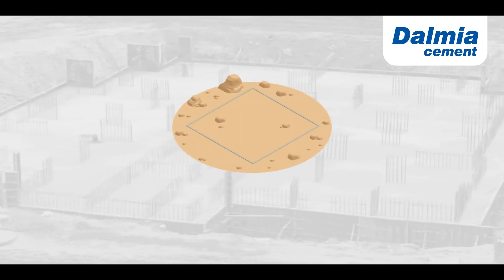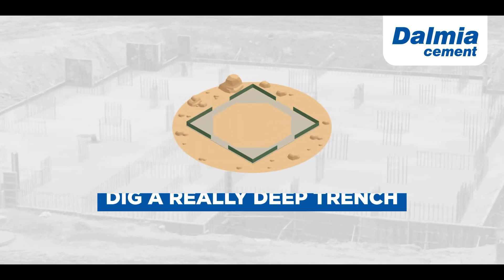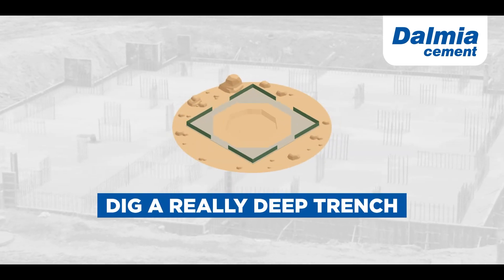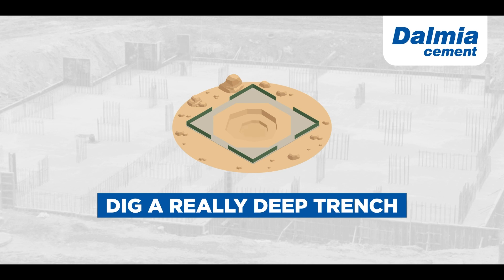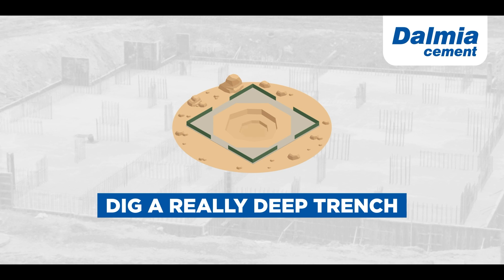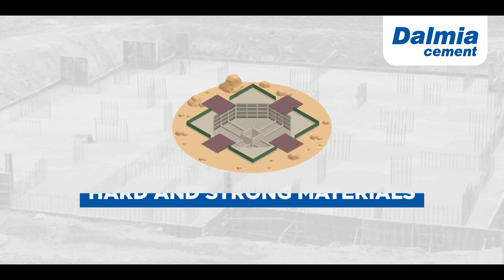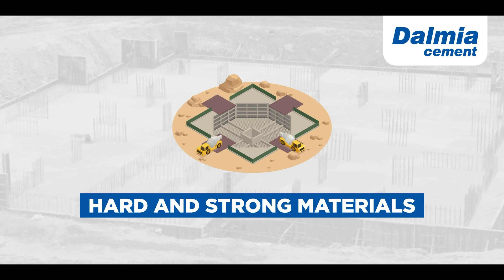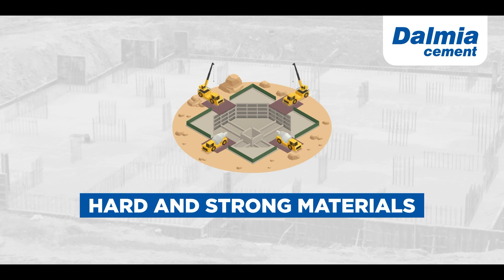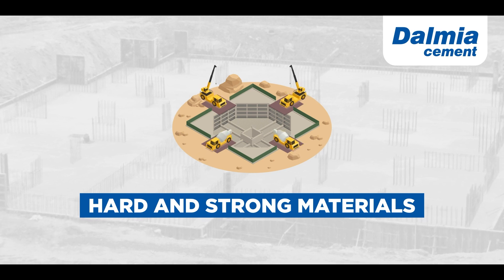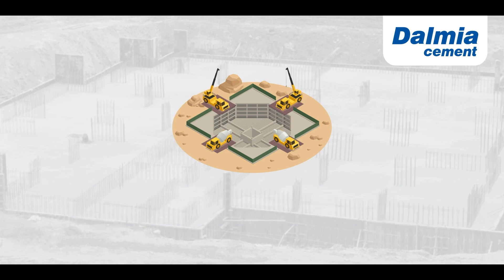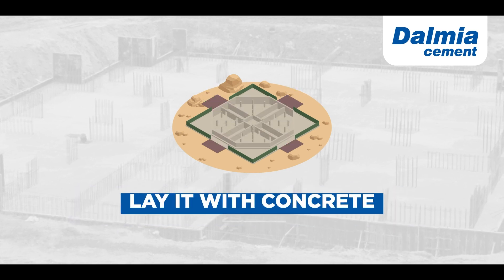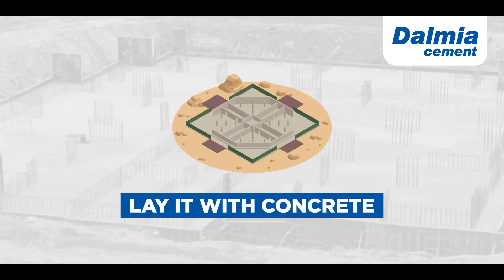To make a foundation, you must dig a really deep trench until you reach the subsoil, which is much more solid than the topsoil. Once the trench is deep enough, it needs to be filled with hard and strong materials to strengthen it. First, we need to place long, thin, round pieces of steel.